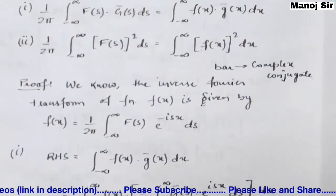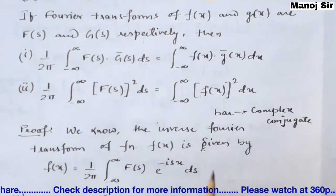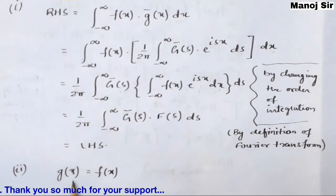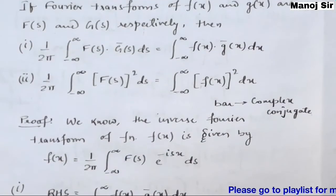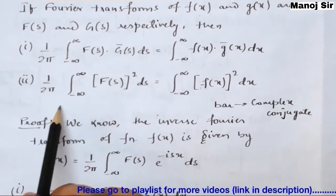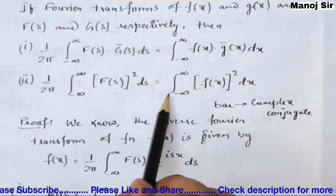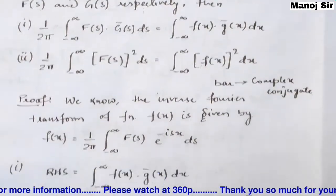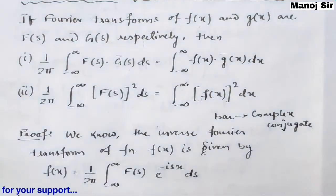To prove the second identity, simply put g(x) = f(x) in the first identity. You will get: (1/2π) ∫₋∞^∞ |F(s)|² ds = ∫₋∞^∞ |f(x)|² dx. So the second Parseval identity follows directly by substitution in the first part.